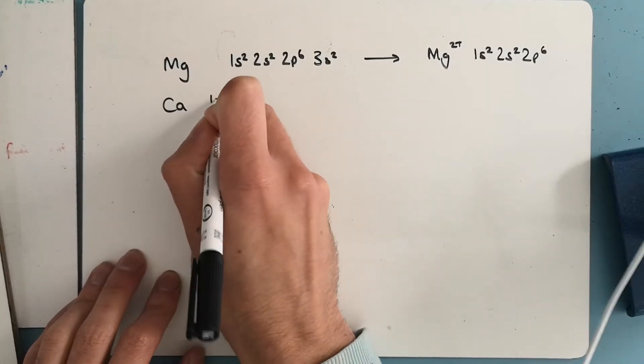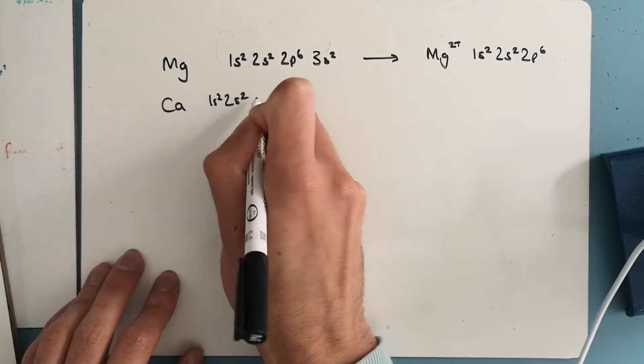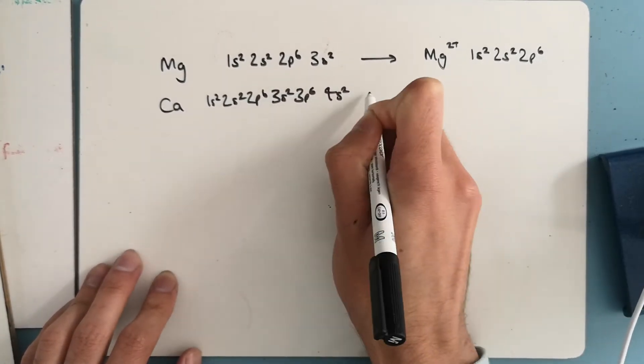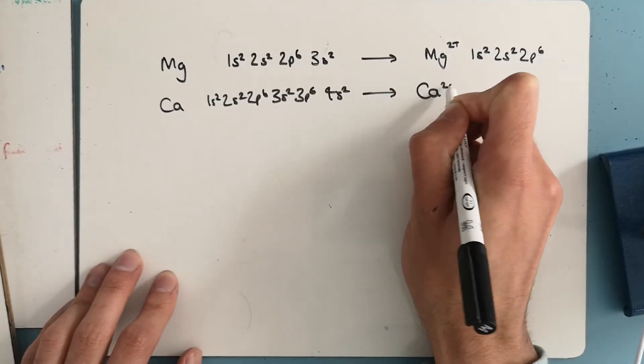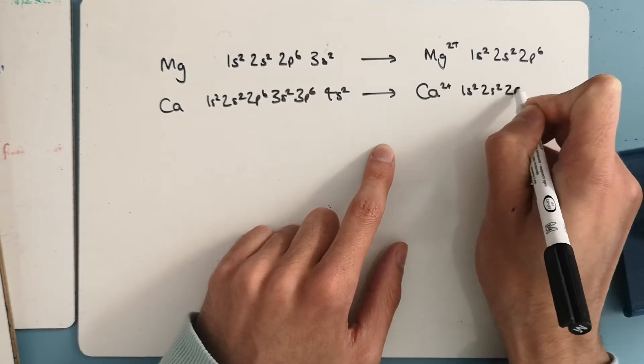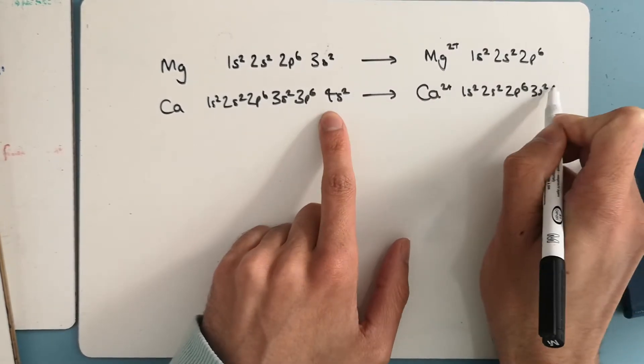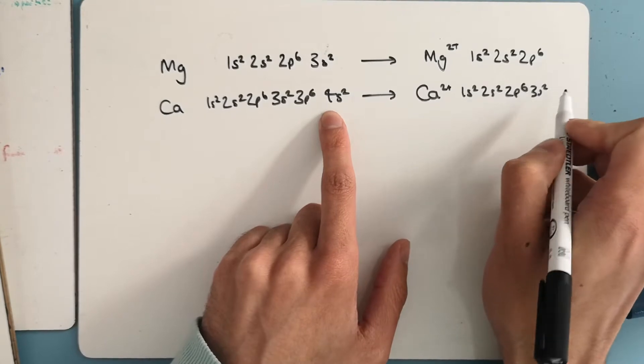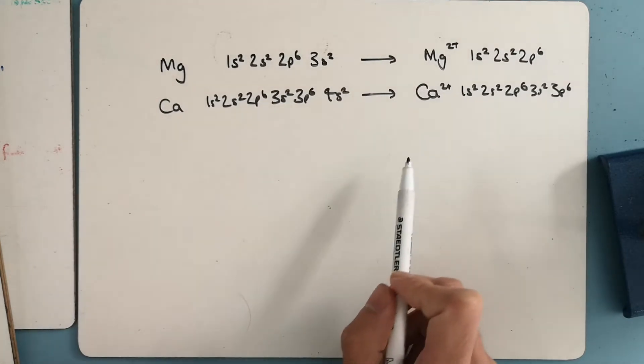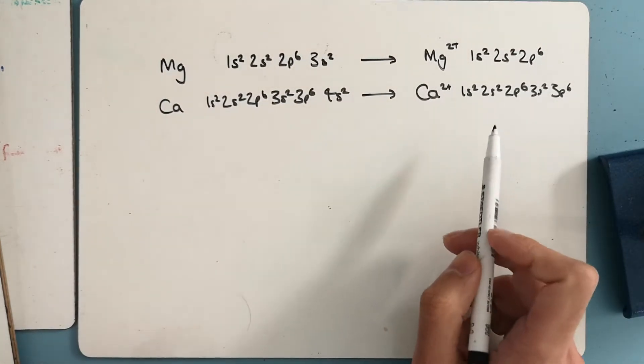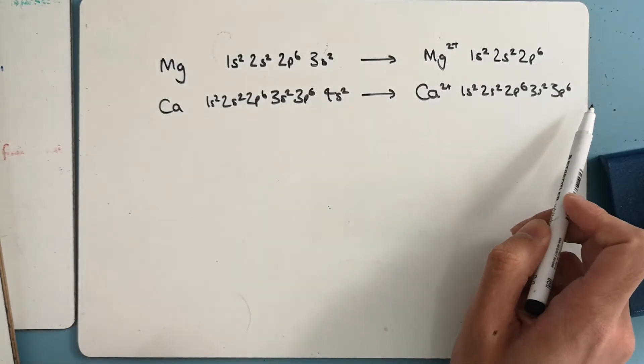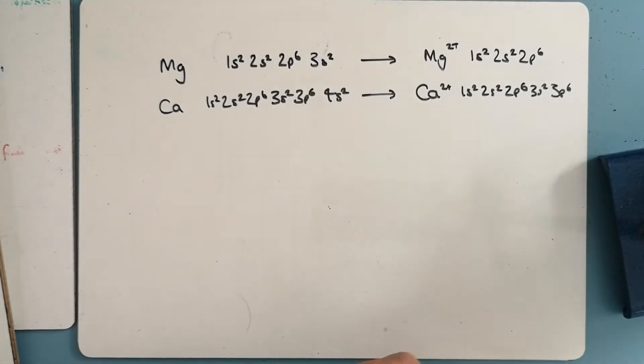Calcium, just below it, has a slightly longer electron configuration. When that goes to calcium 2+, it's going to lose two electrons from the 4s subshell. So we get these electron configurations for their ions, and they have just lost their s electrons right from the end.